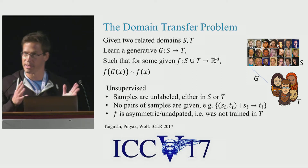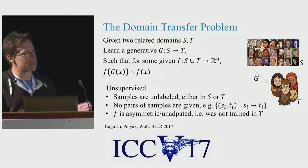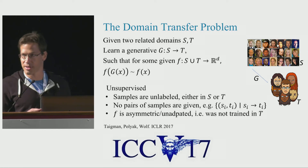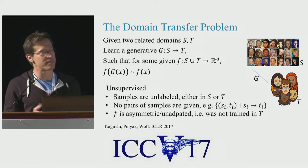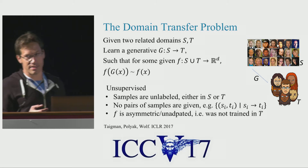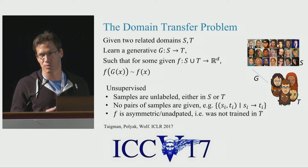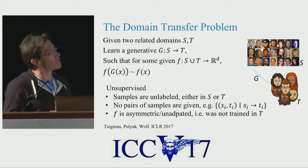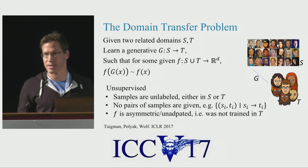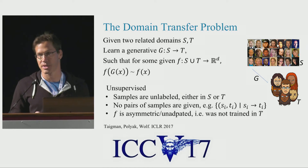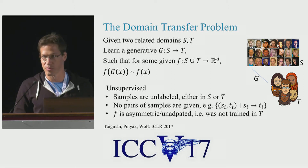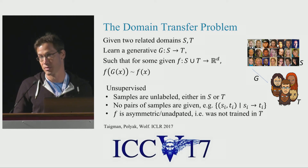Given an input image in the source domain S, we want to generate a new image in the target domain. The input image is X, the generated image is G of X. We would like F of X to be similar to F of G of X. This is unsupervised in the sense that we don't have any matches between the two domains. We have the function F, but F is actually terrible in the target domain — it was trained on real faces and is no good on cartoons.